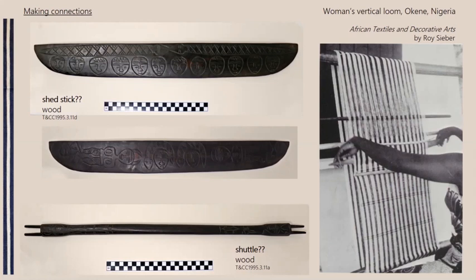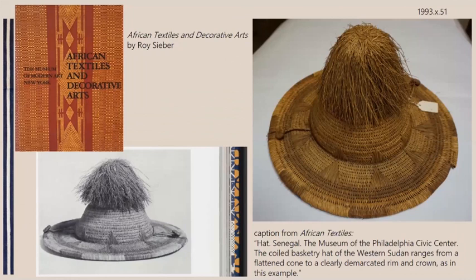I believe the object at the bottom, with the prongs, might be a shuttle, but this one is even more up in the air than the shed sticks. I've scoured online collections — the Met, the Victoria and Albert, the Penn Museum, and many more — and didn't turn up anything similar. I'm really hoping that among the weavers I know are out there today, someone might recognize them, either having seen them in a book, a museum, or their own collection of weaving tools, and help give us some insight and make those connections.